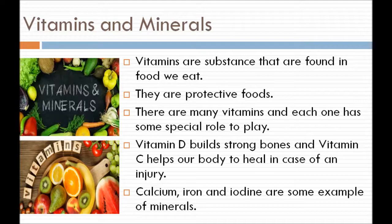Vitamins and minerals. Vitamins are substances that are found in foods we eat. They are protective foods that protect our body. There are many vitamins and each one has a special role to play. Vitamin D builds strong bones and vitamin C helps our body to heal in case of injury. Besides vitamins, minerals are also protective foods. Calcium, iron and iodine are some examples of minerals.